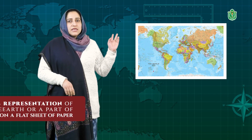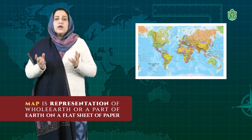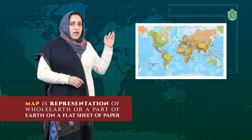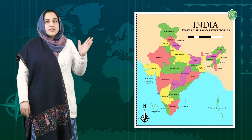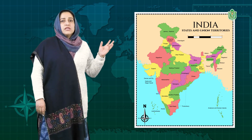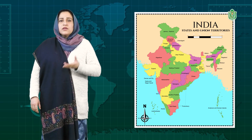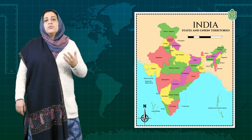A map is a representation of the whole earth or a part of the earth on a flat sheet of paper. We can see various details of a particular area. Like a map of India can show the different states and union territories — minor details also. However, one major shortcoming is that we cannot show the curved nature of the earth on a flat sheet of paper; the sizes and shapes get distorted.